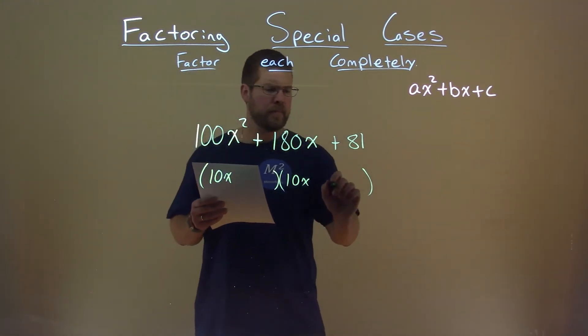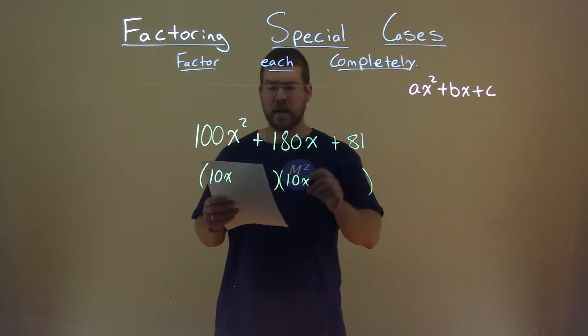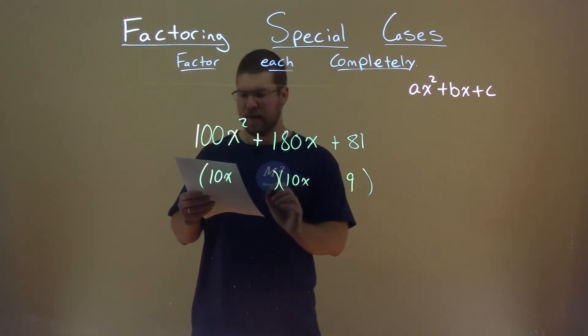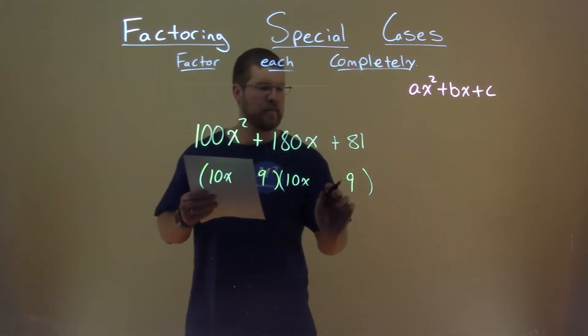What about the 81? Well, square root of 81 is 9, so we have a 9 here and a 9 here, 9 times 9 is 81.